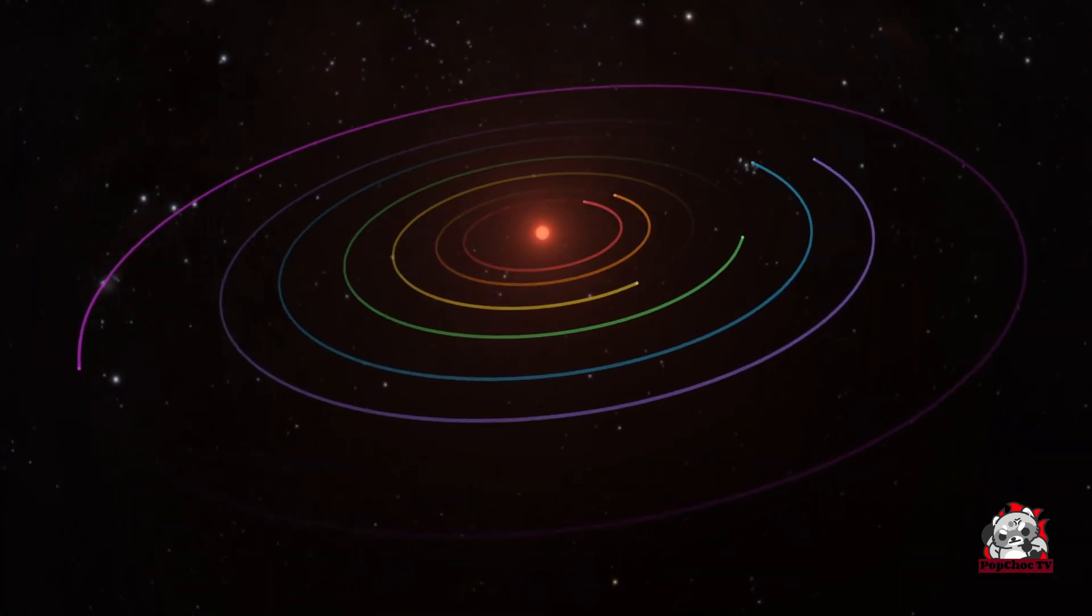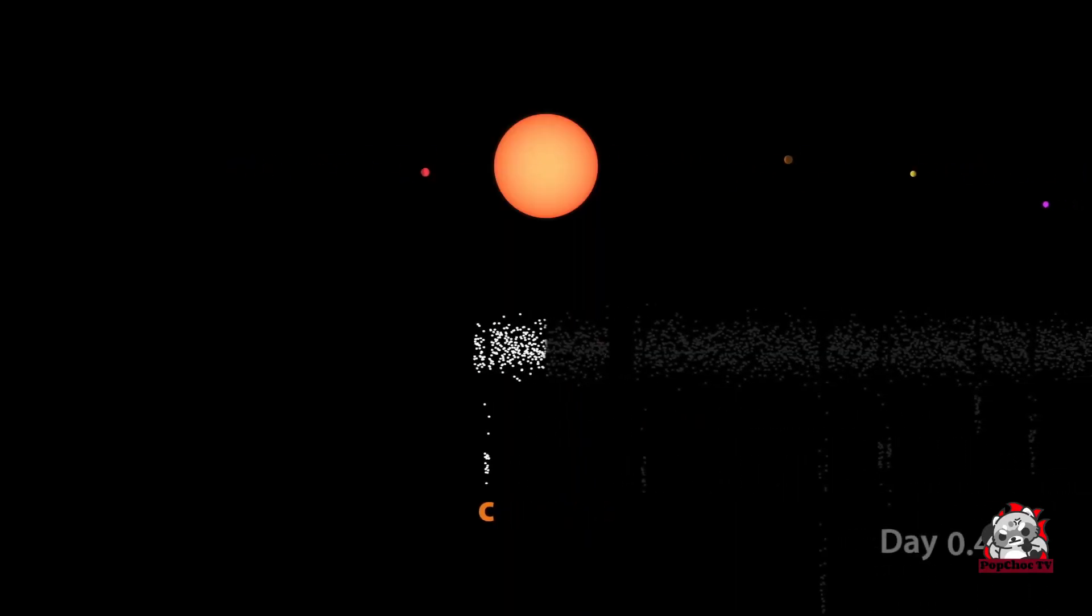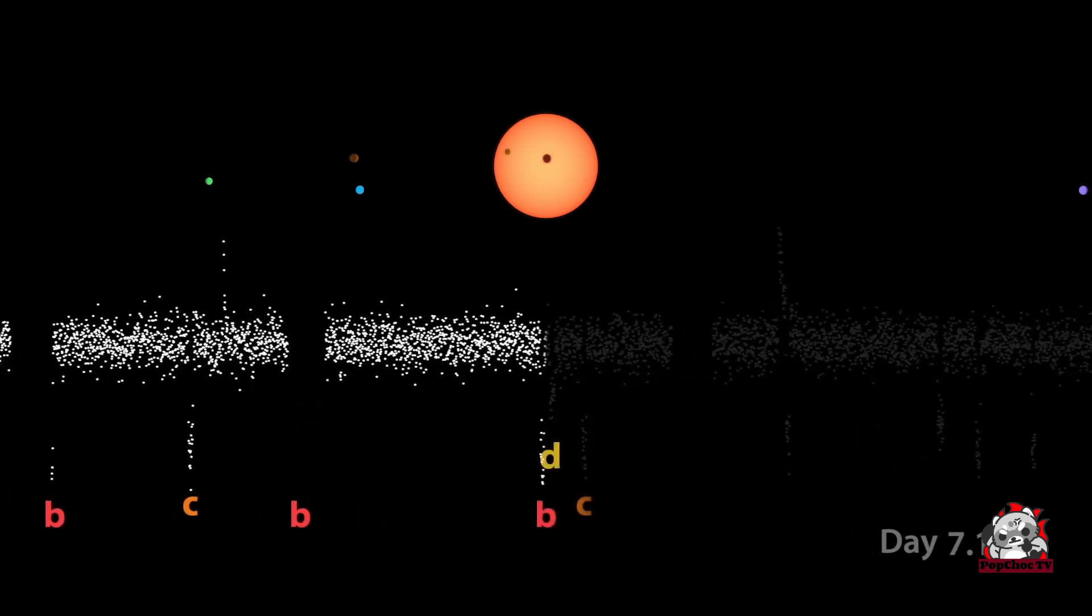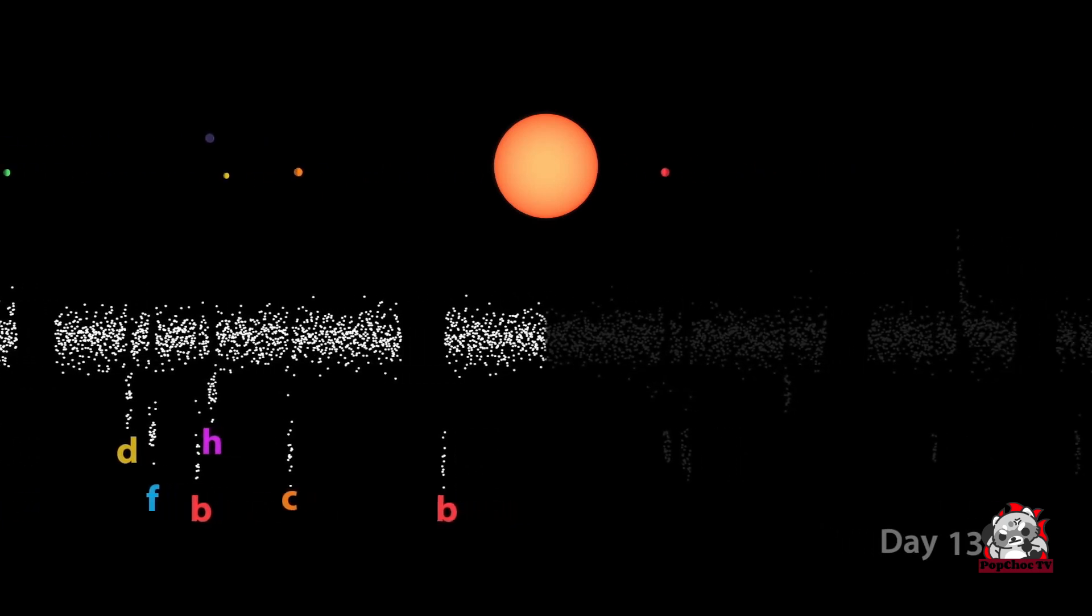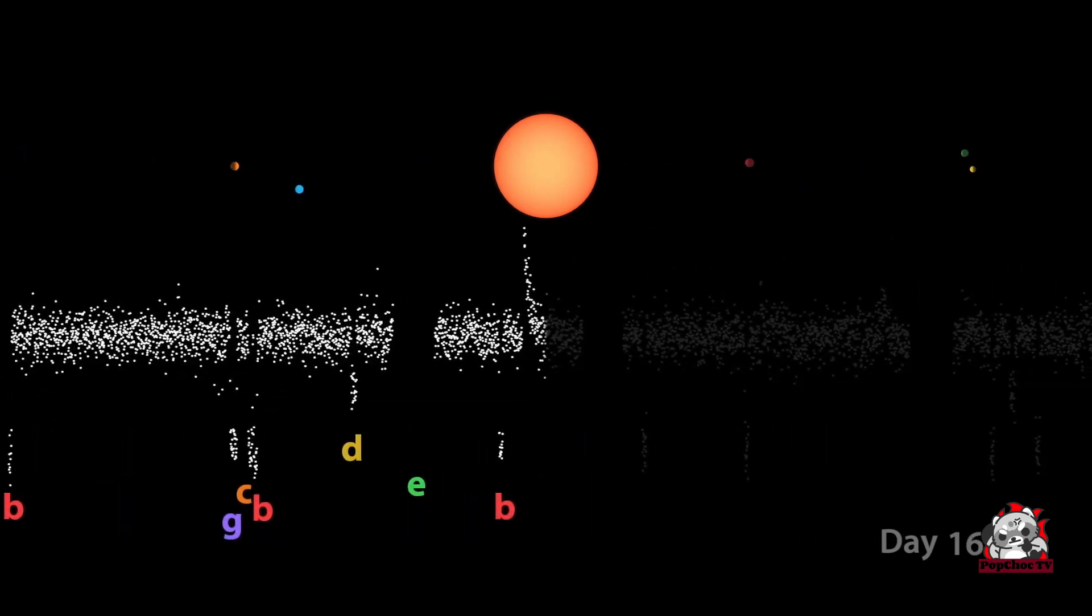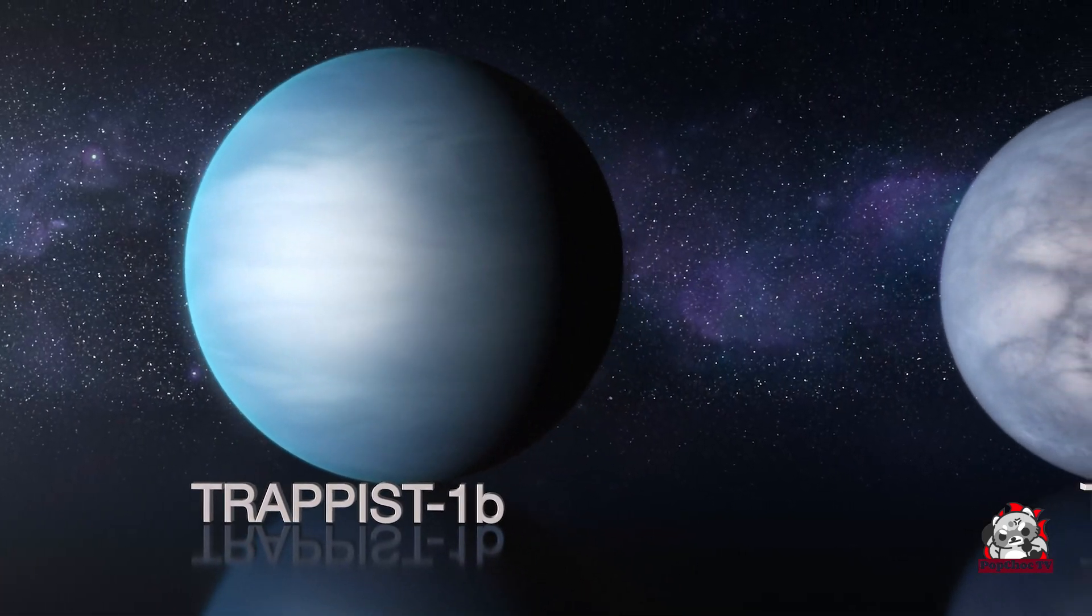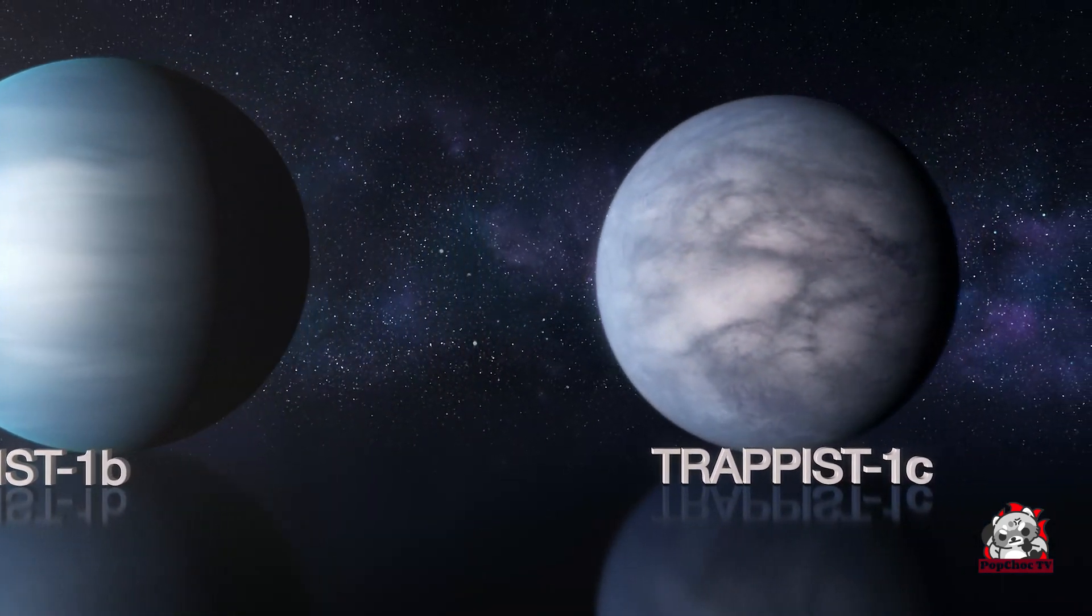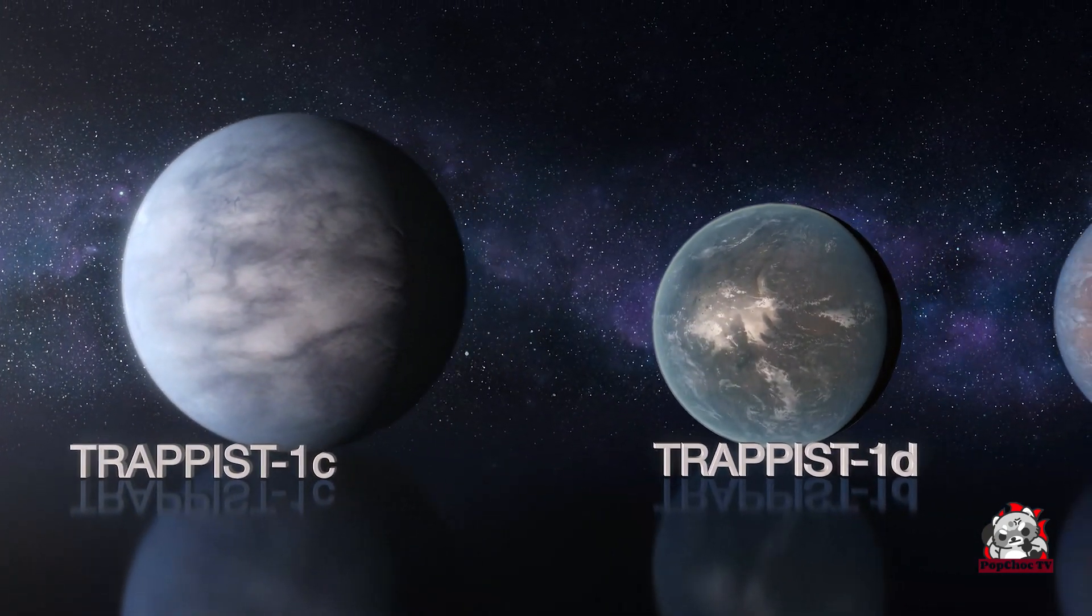Moving on to number 4, we have the incredible TRAPPIST-1 solar system. In 2017, astronomers announced the discovery of the TRAPPIST-1 solar system, containing seven Earth-sized planets orbiting a cool dwarf star. What makes this discovery truly extraordinary is that at least three of these planets lie within the star's habitable zone, making them prime candidates for the potential presence of liquid water and life. The TRAPPIST-1 system has been a game-changer in the search for extraterrestrial life.